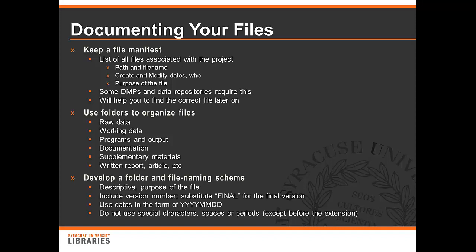You should develop a folder and file naming scheme. A file name should be descriptive and indicate something about the purpose of the file. It should include a version number — you can substitute the word 'final' for the very last version. Using dates in the form of year, month, and day will not only help you find what the most recent file is, you will also be able to sort the files in date order. You should not use special characters such as an ampersand or exclamation points, and do not use spaces or periods in your file names, as some software will not allow this.